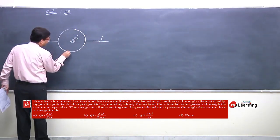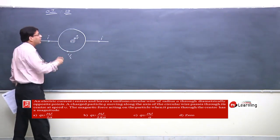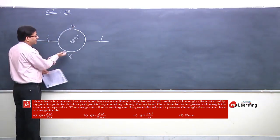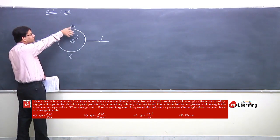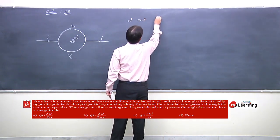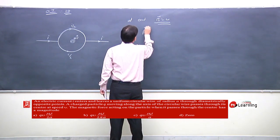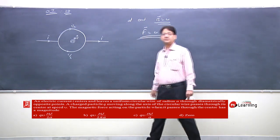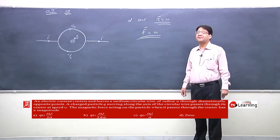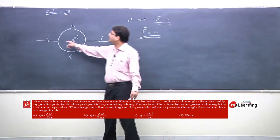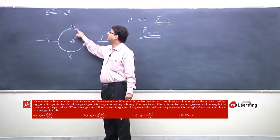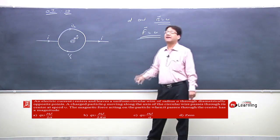Because the wire splits into two halves, each carries current I/2. Due to one half, the magnetic field at the center is outward the board, and due to the other half, the magnetic field is inward the board. At the center, the net magnetic field is zero — one half gives field into the board and the other half gives field outward the board — so net magnetic field is zero, and therefore the force is zero.